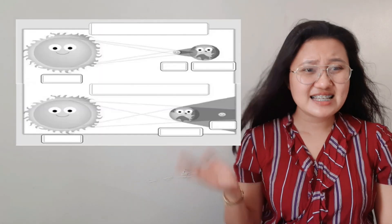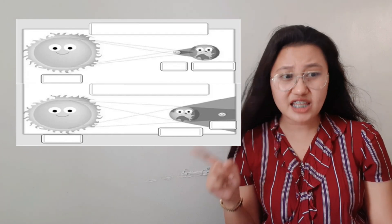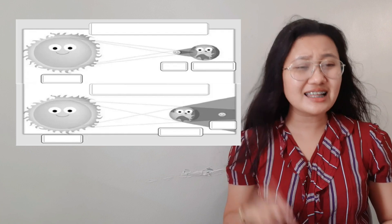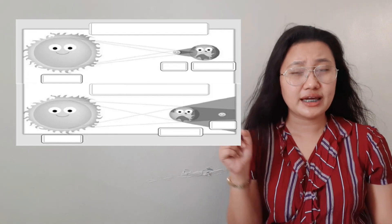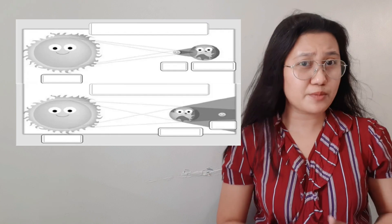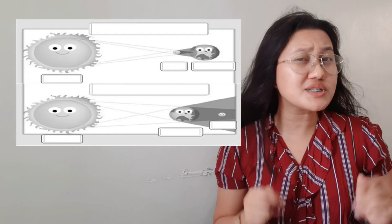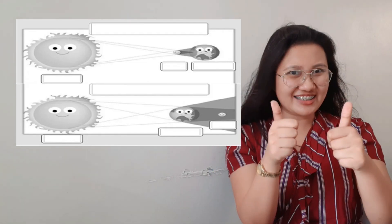For learning task number three, there is a figure showing two diagrams — one with Sun, Moon, Earth, and another with Sun, Earth, Moon. You have to identify which is the solar eclipse and which is the lunar eclipse, and label the sun, moon, and earth accordingly. Since we discussed the positions of the heavenly bodies for both types of eclipses, you can do this on your own.